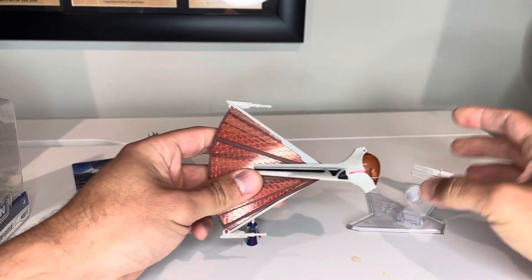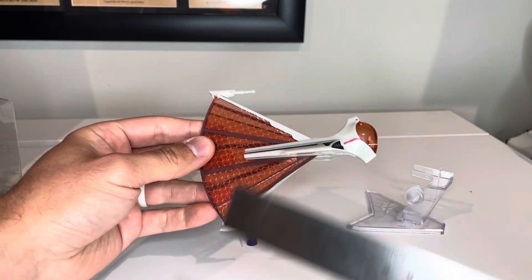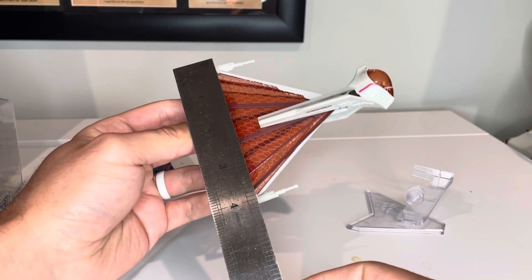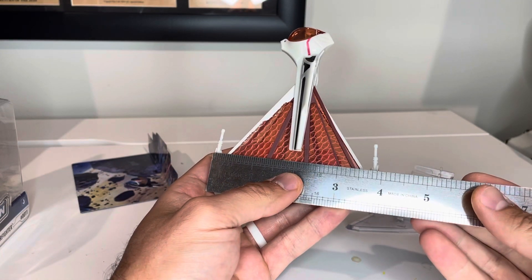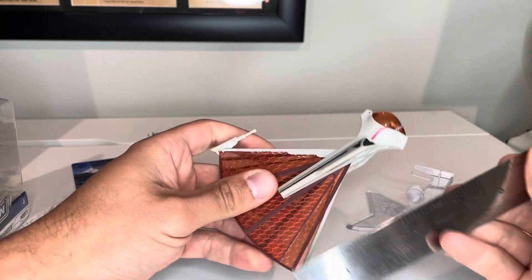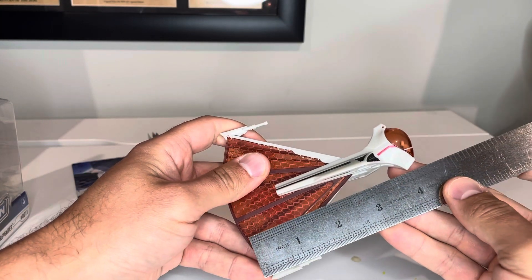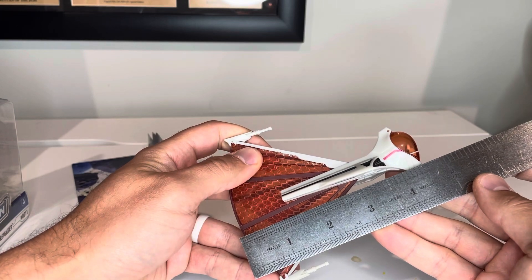When it's in the folded fan position, the height is about just about four inches from gun to gun. From front to back it's about four and a half, maybe four and three quarter inches.